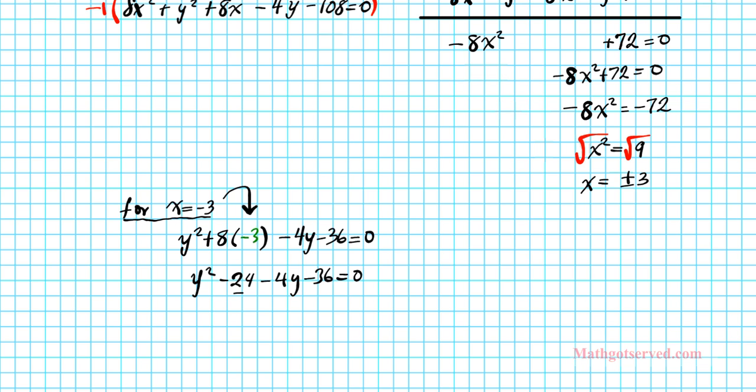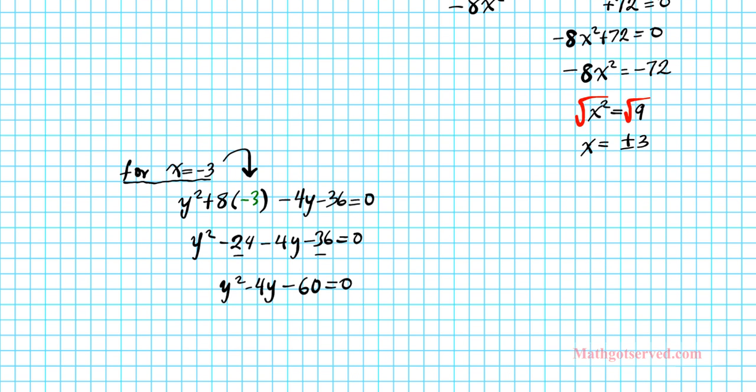So we combine like terms, -24 and -36. We'll have y² - 4y - 60 = 0. Now we can solve this quadratic equation by grouping, by factorization.